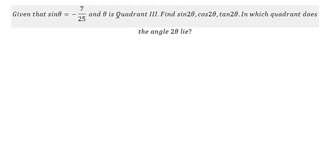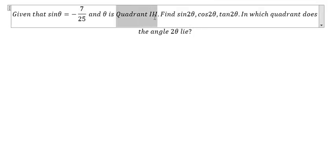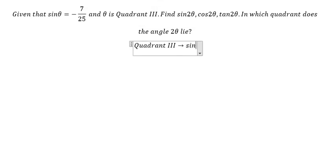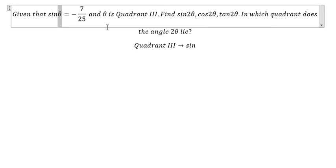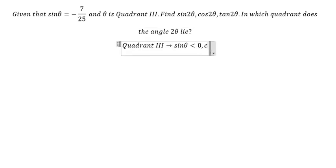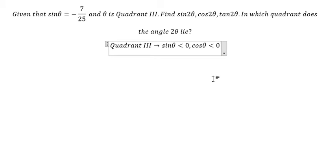So now I will show you the answer. We know that in quadrant number 3, sin θ should be negative and cos θ should also be negative.